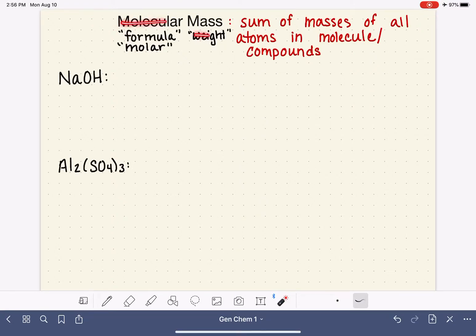So there's a lot of different ways that you could hear molecular mass - molecular weight, formula weight, formula mass, molar mass, or molar weight. They all mean the same thing. No matter what we're saying, add up the masses of all of the atoms in that particular molecule or compound. We're going to practice with two examples: sodium hydroxide and aluminum sulfate. This is really as simple as identifying all of the atoms that are present in the compound.